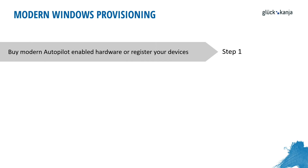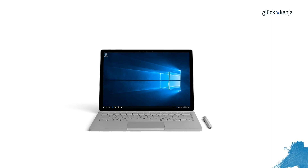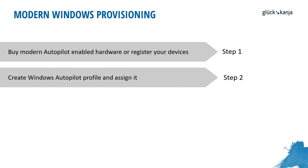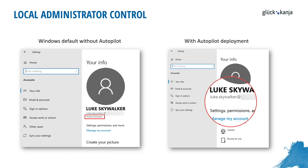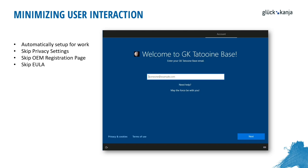To summarize, there are four simple steps. Step one: buy modern Autopilot-enabled hardware and register your devices — this can be done by the vendor or by yourself. Vendors like Surface, Lenovo, Dell, and Fujitsu are all capable of this. Step two: create a Windows Autopilot profile and assign it to your new devices. This is important because without it, Windows default settings would create local administrators on every device, which the Autopilot deployment service can prevent.